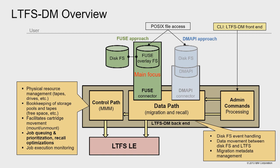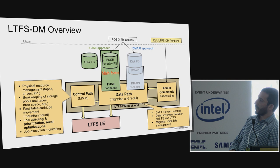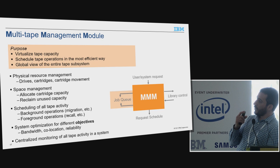The data path also makes sure that appropriate data blocks can be deleted from disk to save capacity. The admin tooling is a CLI that enables monitoring, administration, and gives explicit control over where to migrate a file or directory on tape - so you can explicitly override the system and say you want your PowerPoint files to always stay on disk, or that you want a certain subdirectory recalled from tape quickly.